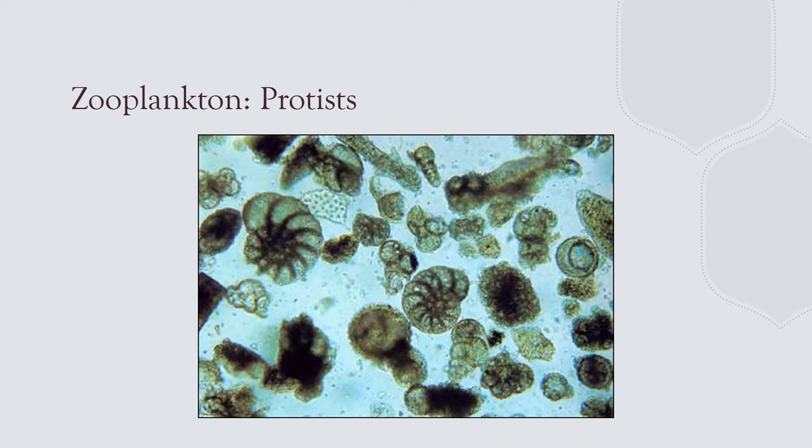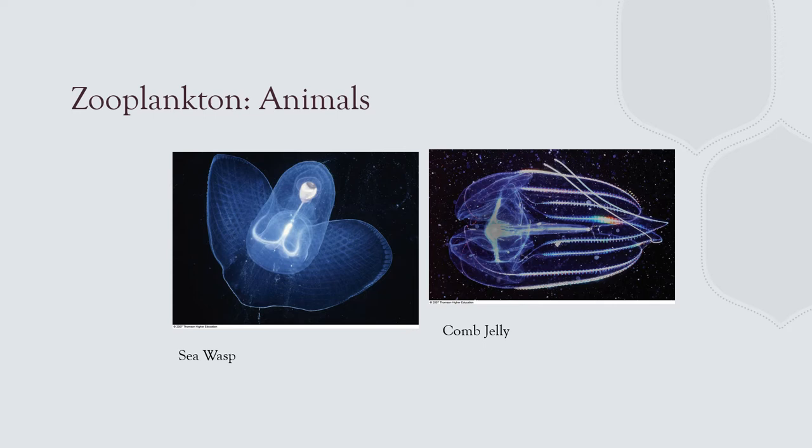Some protists belong to Kingdom Protista. This image shows calcareous ooze — calcium-based — made up of foraminifera. Zooplankton can also be animals like jellyfish and comb jellies. Comb jellies belong to a group of animals called Ctenophora.